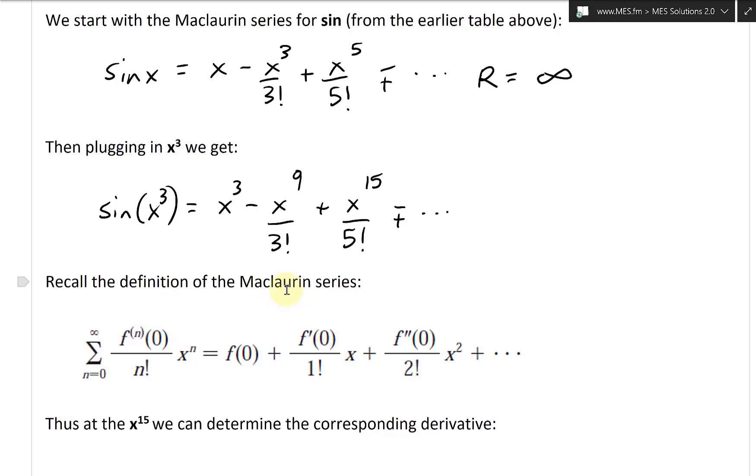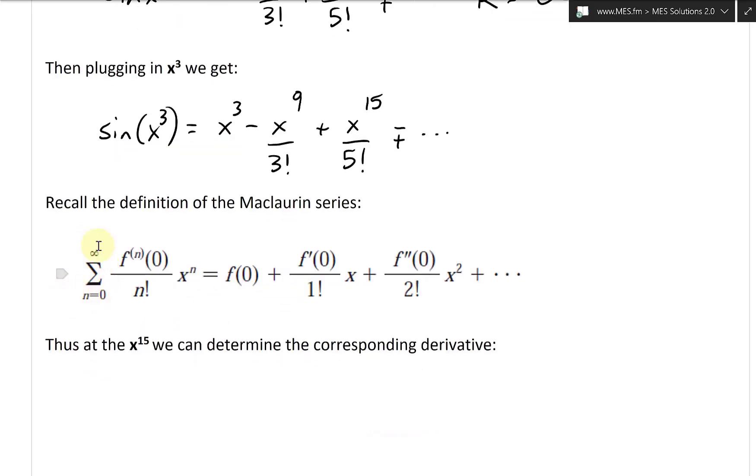So sine of x cubed equals x to the 3 minus x to the 9 over 3 factorial, plus x to the 15 over 5 factorial minus plus dot dot dot. And then again, this would be r is equal to infinity. Recall the definition of the Maclaurin series. We have summation from n equals 0 to infinity, f n factorial of 0 times x power of n divided by n factorial. Notice that the n matches up with the power and the factorial.